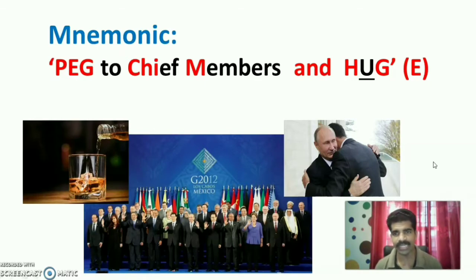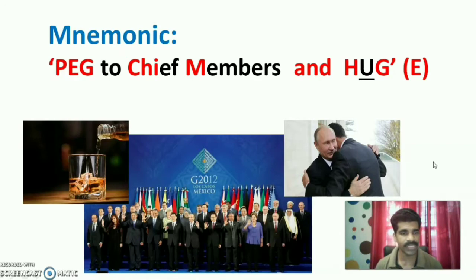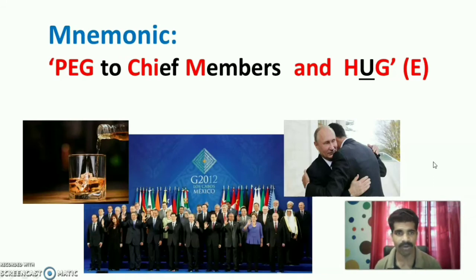There is one change: instead of HUG (H-U-G), it is actually HEG (H-E-G). The starting word is PEG (P-E-G) and the ending word is HEG (H-E-G) — only the P and H are changed. Let us now expand the mnemonics.